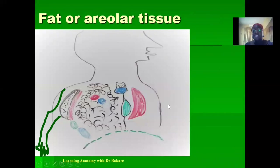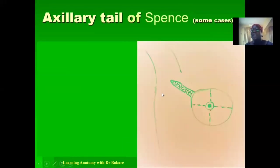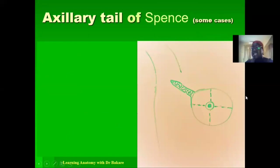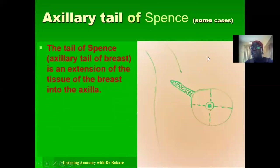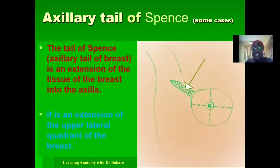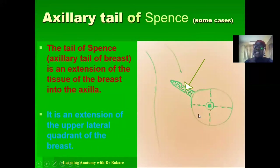Fat tissue is also present within the axilla. Additionally, in some cases, we have the axillary tail of Spence — the extension of breast tissue into the axilla. This extension arises from the upper lateral quadrant of the breast and extends into the axilla.